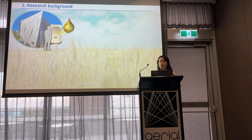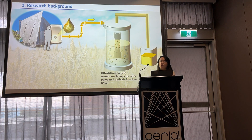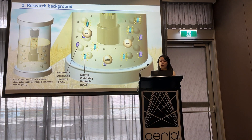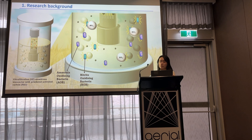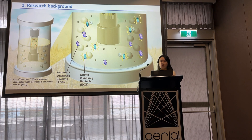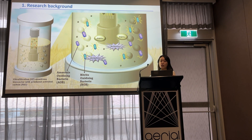Therefore, urine nitrification in an ultra-filtration membrane bioreactor with activated carbon can be an innovative solution to address these drawbacks. In the bioreactor, ammonia-oxidizing bacteria converts ammonia to nitrite, and then nitrite-oxidizing bacteria converts nitrite to nitrate, which lowers pH without any chemical addition. At the same time, high organic contents can be removed and micropollutants can be absorbed on the activated carbon.